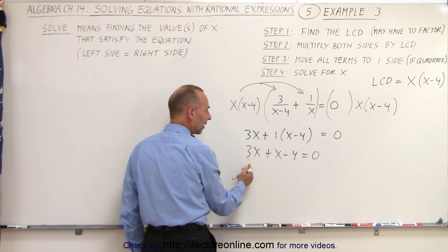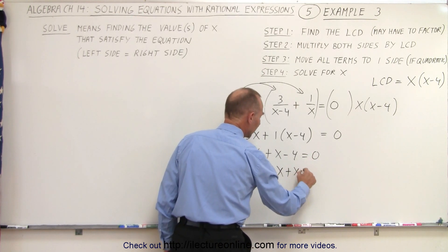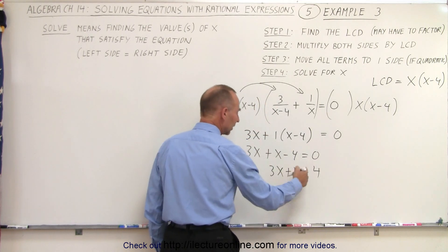We do want to keep all the x's to the left side. We move all the numbers to the right side, so we end up with 3x plus x equals a positive 4. The sign changes when we cross the equal sign. Collect common terms.